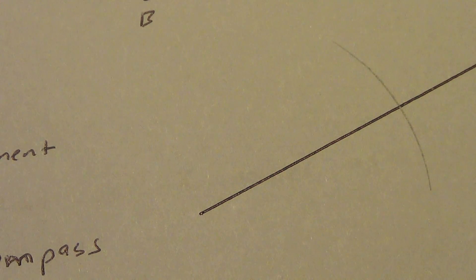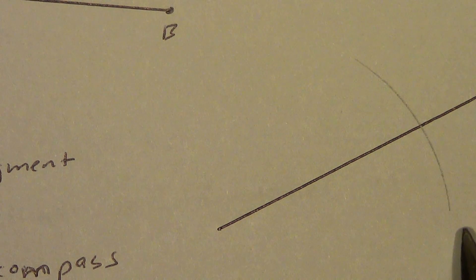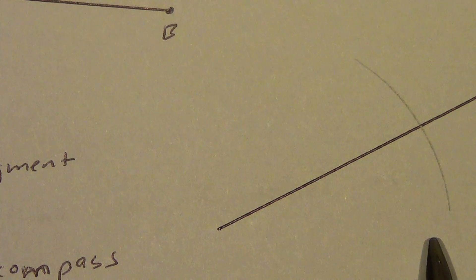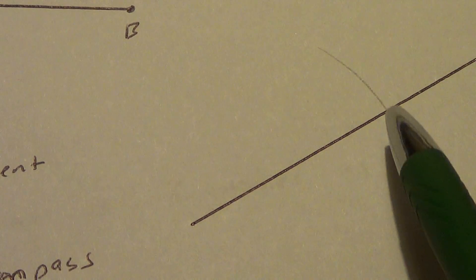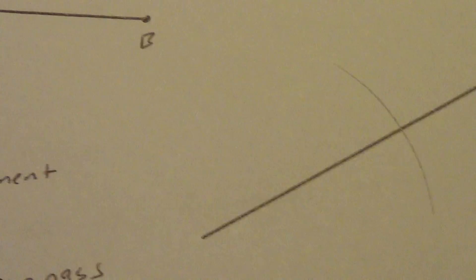Now what happens is that from this point to any point on this arc is the exact same distance as we started with here. And since that includes that little point of intersection there, we're good.